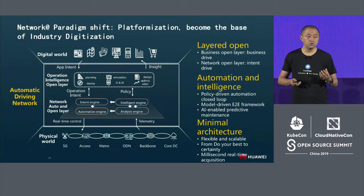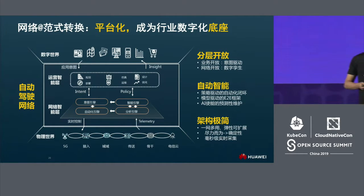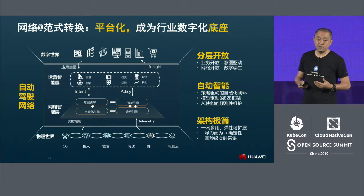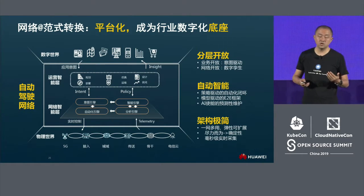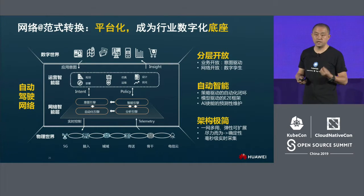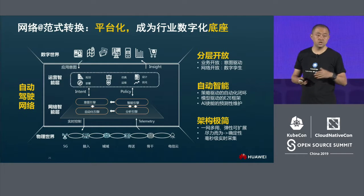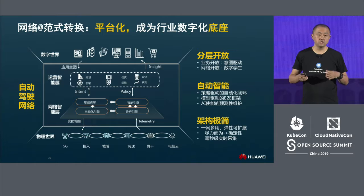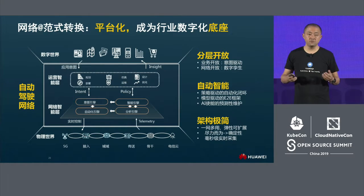We first look at the transformation of the network: using automation and platform thinking to rebuild. Openness here means enabling third-party applications. Without this openness, systems become siloed. We must try to build the network in a platform pattern, with significant internal changes. We start by opening layer by layer — 100% opening makes platform building too complicated, so a layered approach balances capability and complexity.